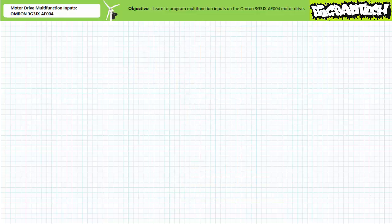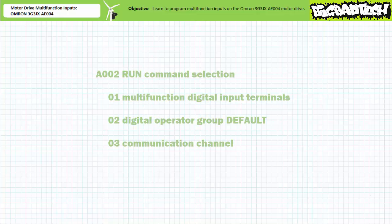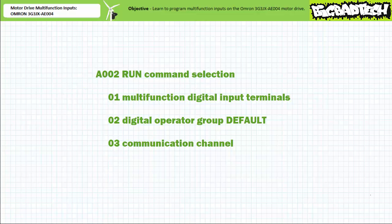The run command on the OMRON 3G3JX AE004 motor drive has a similar setting: extended function parameter A002, run command selection. 01 is the multi-function digital input terminals — this is the setting we'll make use of today. 02, the default setting, is the run and stop/reset button in the digital operator group. 03 is over a communication channel.